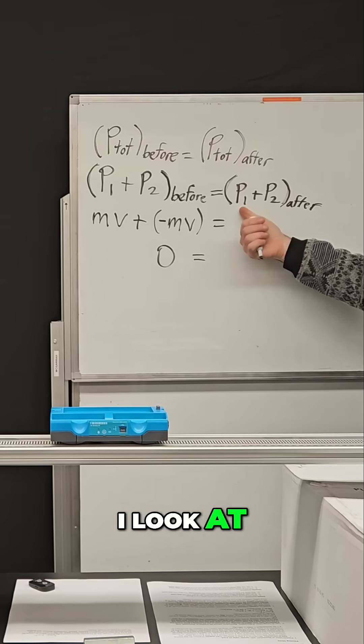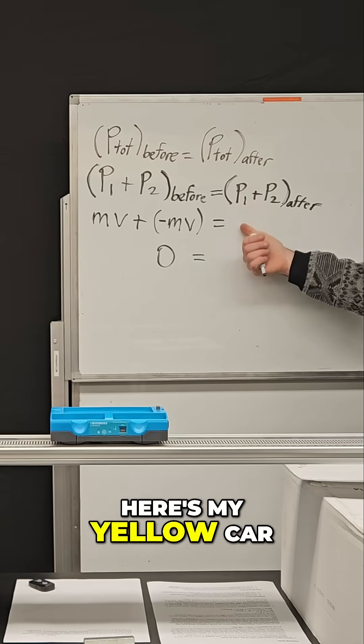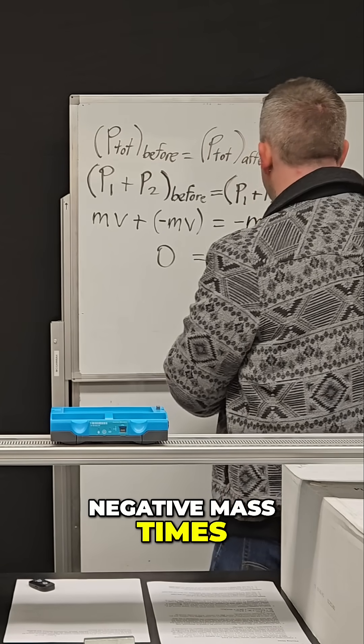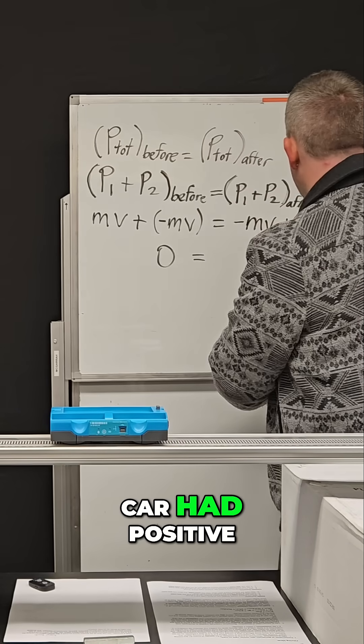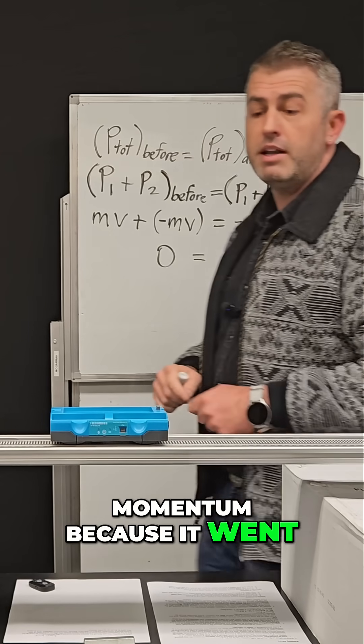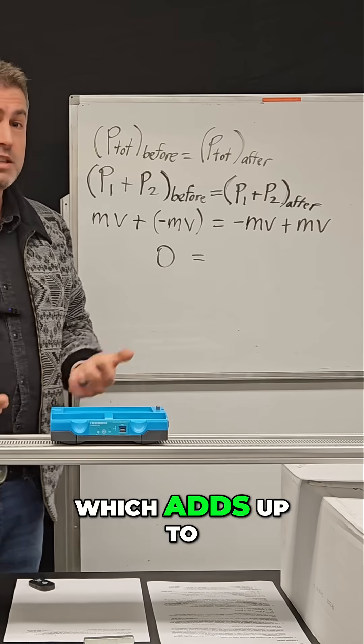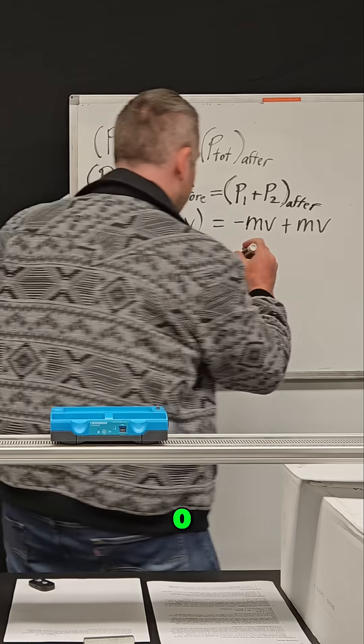Which means, if I look at the after side of the equation, here's my yellow car, it had a negative mass times velocity, because it had negative momentum. And the blue car had positive momentum, because it went in the positive direction. Which adds up to an overall momentum of, you guessed it, zero.